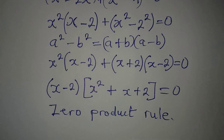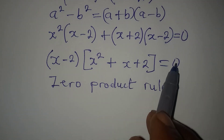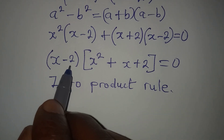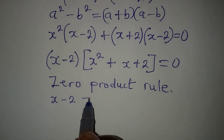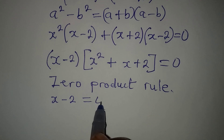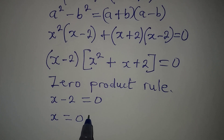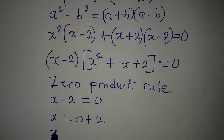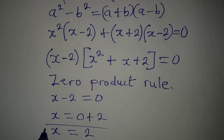The zero product rule says that either factor should equal zero. Beginning with the first factor, x minus 2 equals 0, which means x is equal to 2.